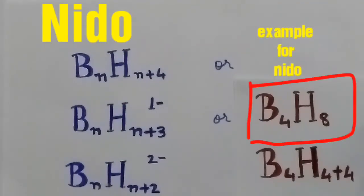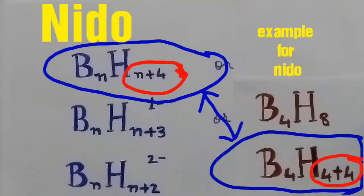In the complex B4H8, it can be written as B4H4+4 in the expanded form. Hence it becomes a nido structure.